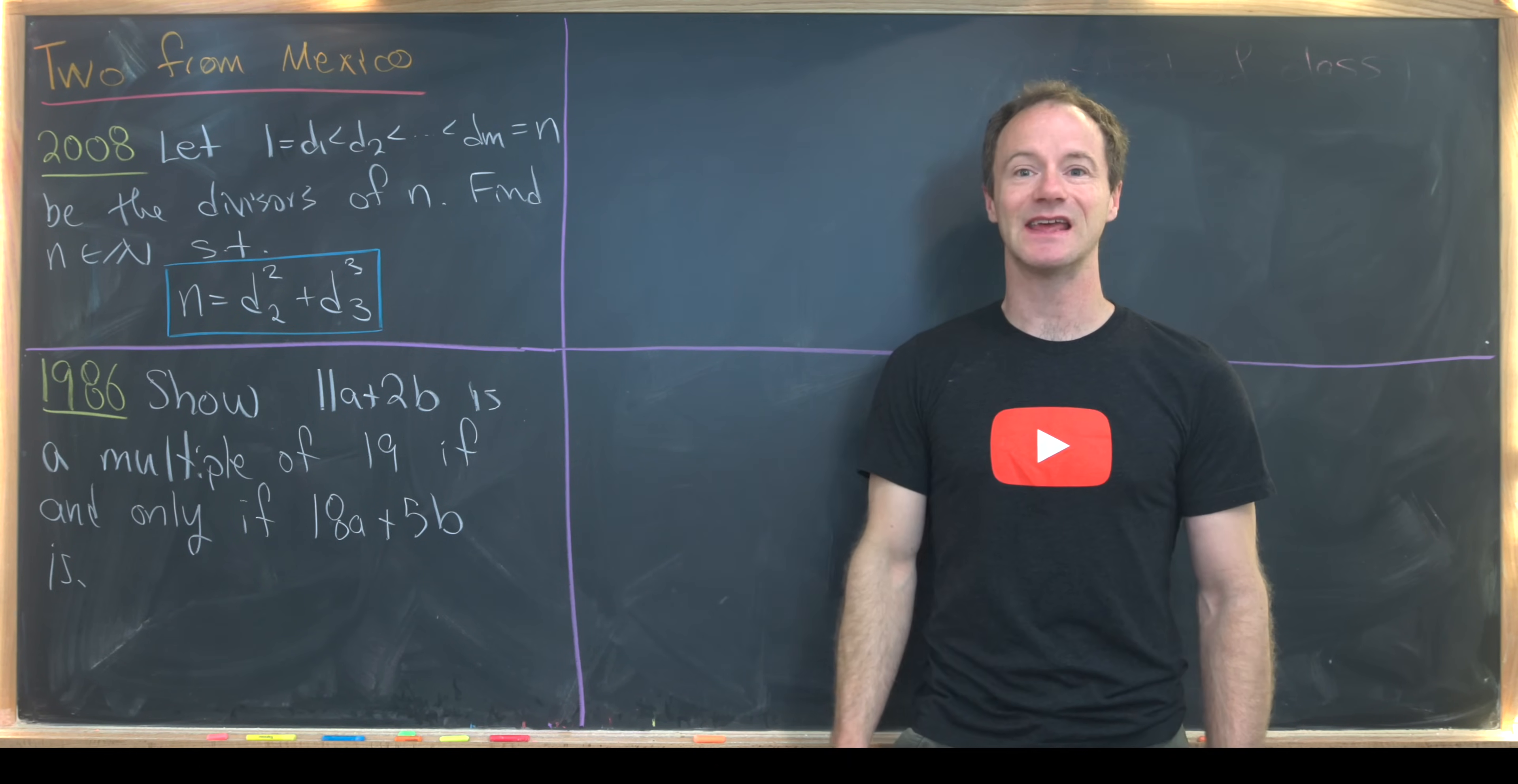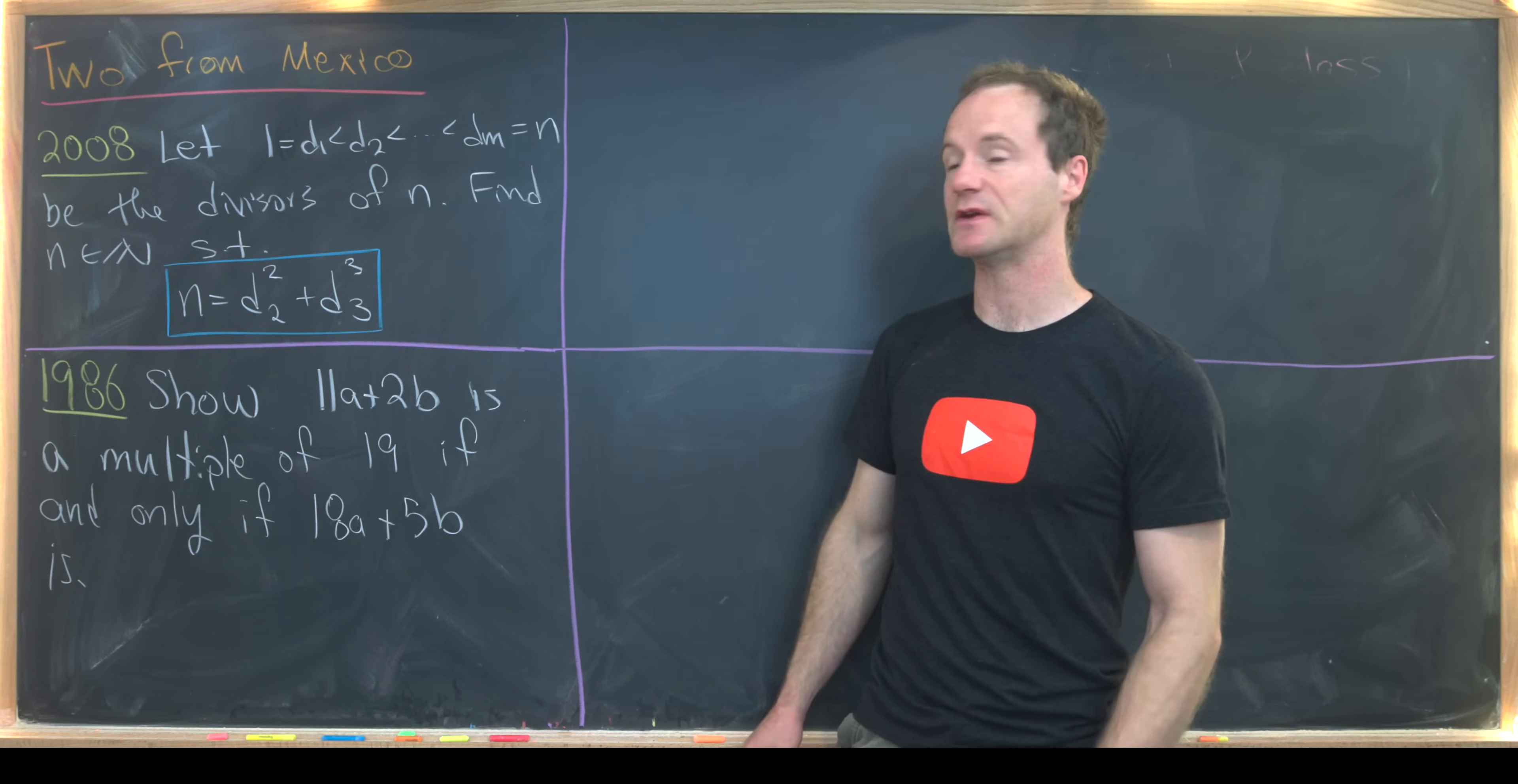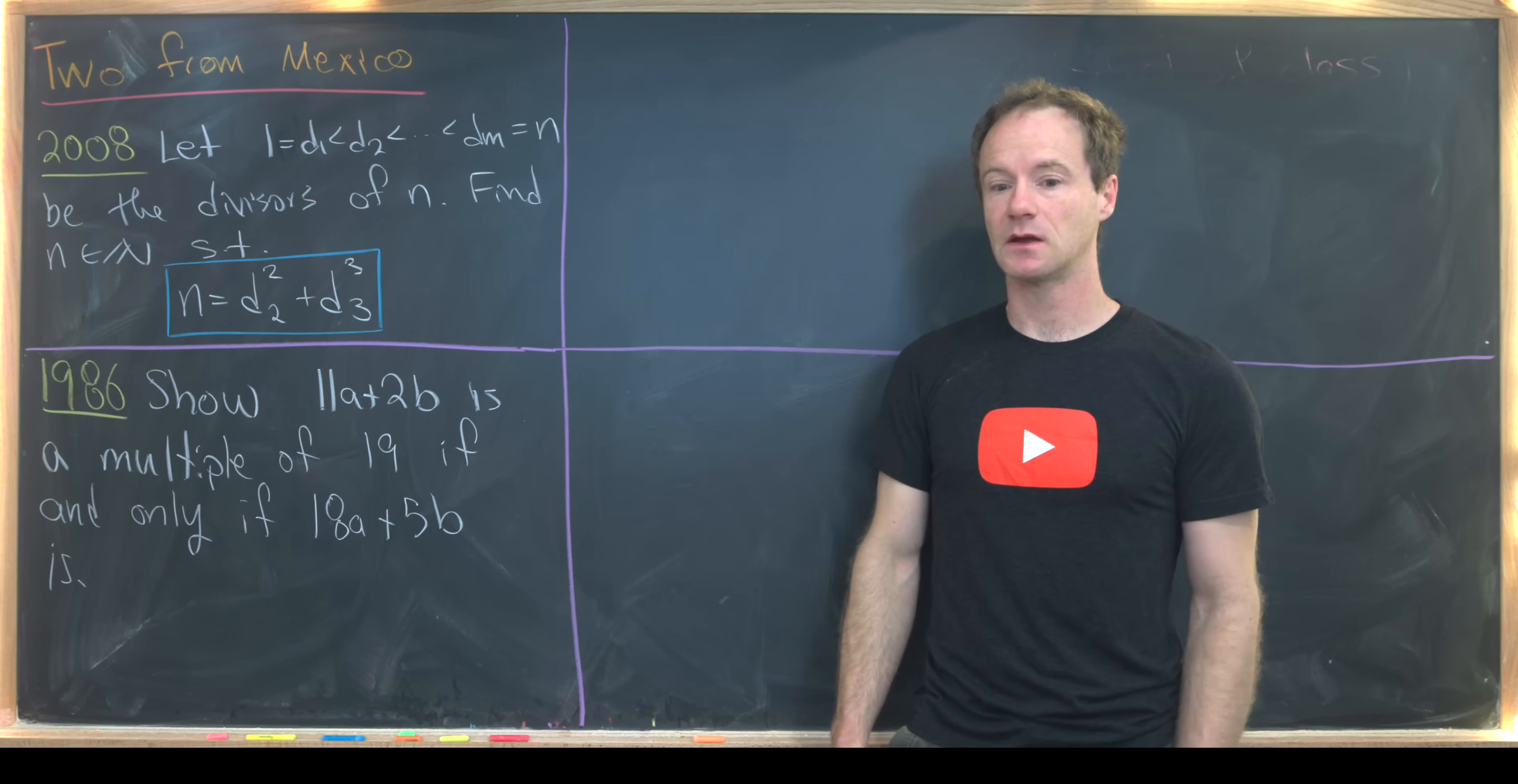Let's first notice that N cannot be prime. Because if N were prime, then D3 would not exist. Our list would just be 1 and P.